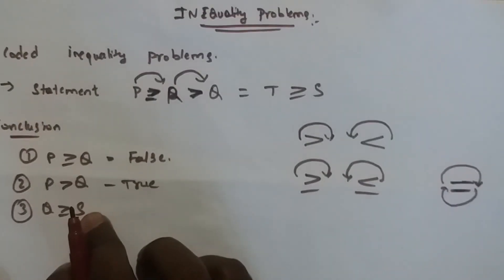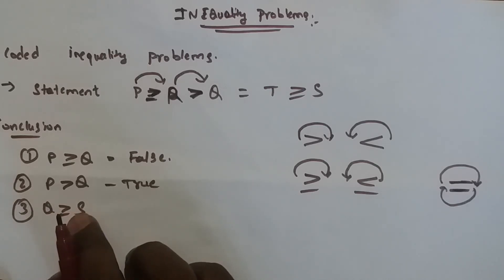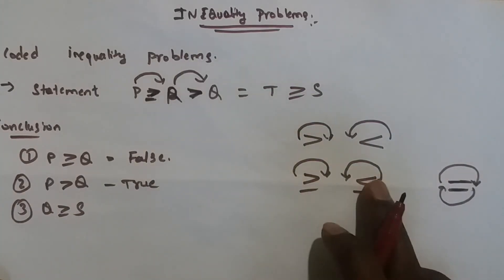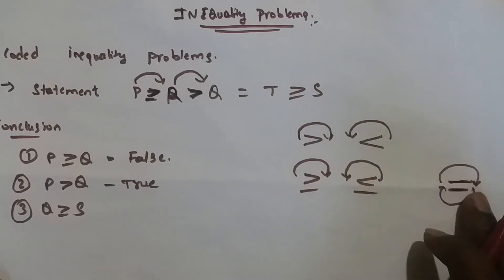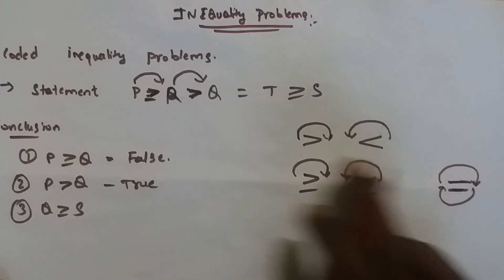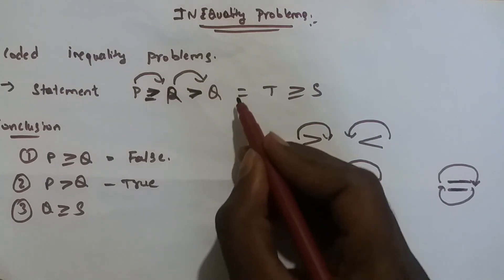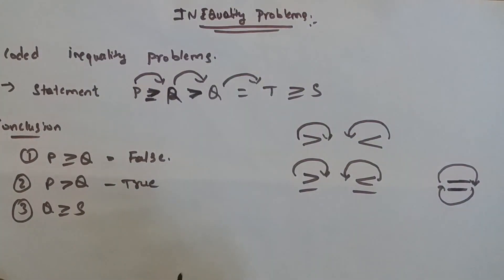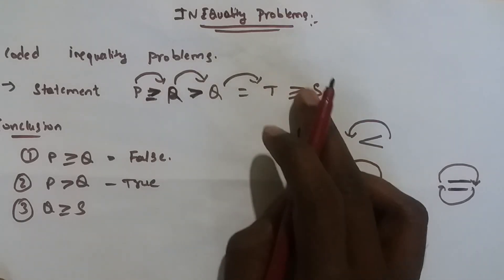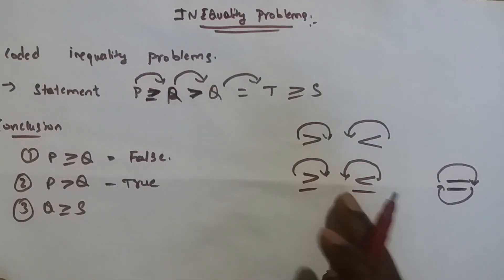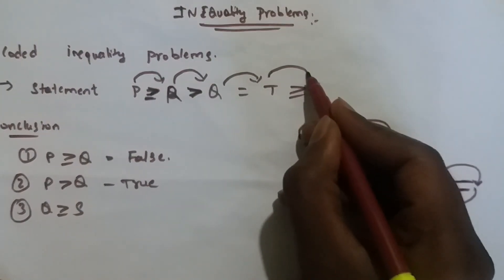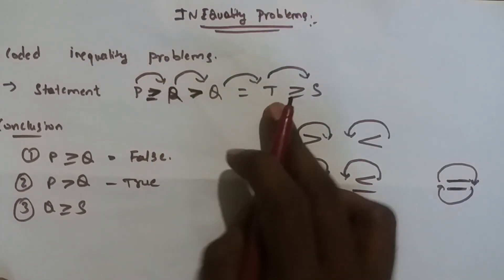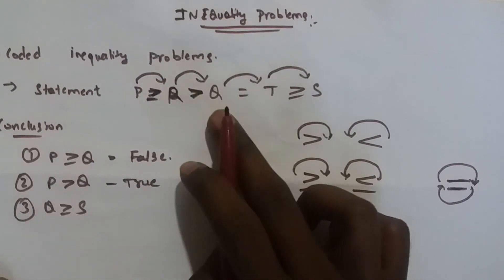Now find out whether q greater than or equal to s is valid. Here q is equal to t, and t is greater than or equal to s. So q passes through t to s, making q greater than or equal to s a valid conclusion.